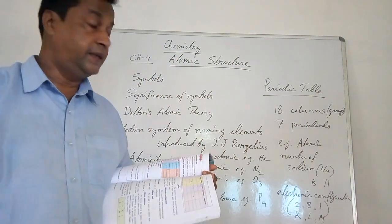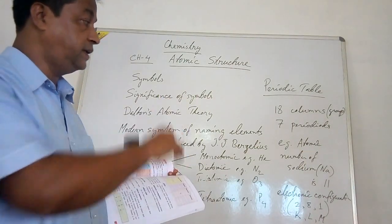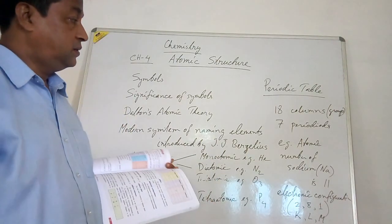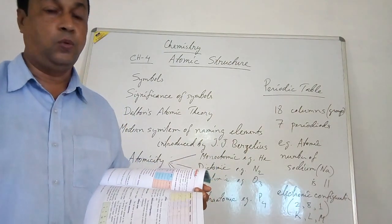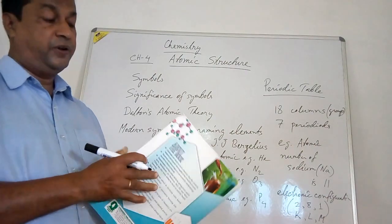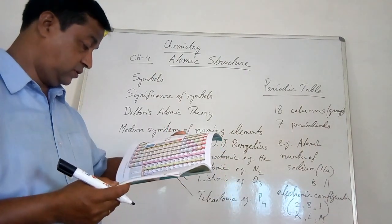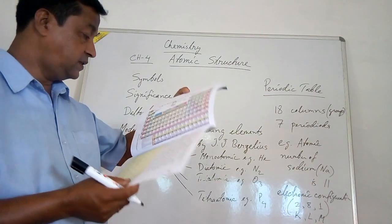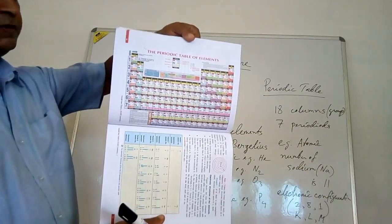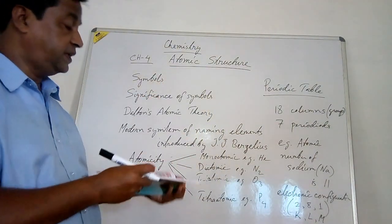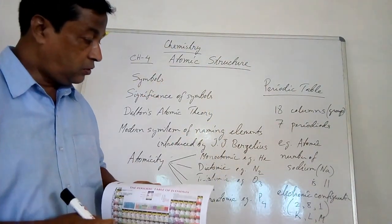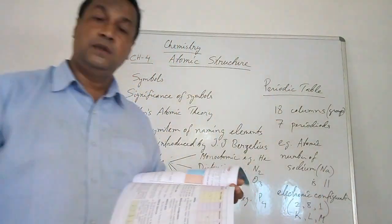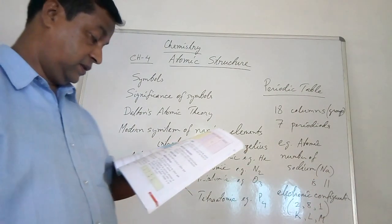Depending on the number of electrons in the outer shell, elements are placed in a group. Since sodium has 1 electron in its outer shell, it is kept in Group 1A. You can verify this by looking at the periodic table chart on page 66 of your textbook, where sodium is placed in Group 1A.